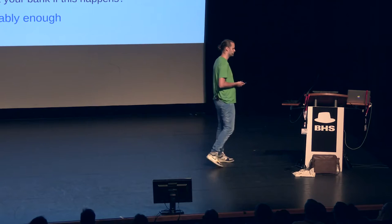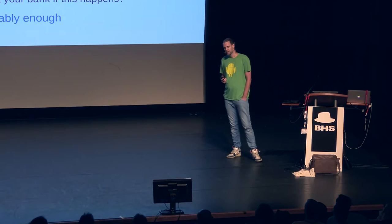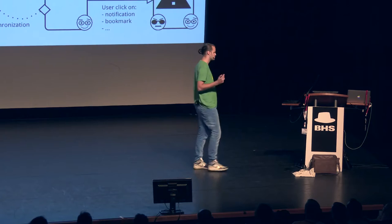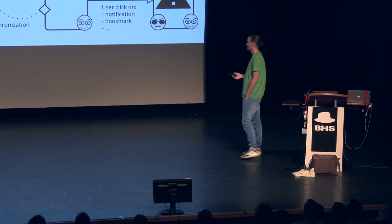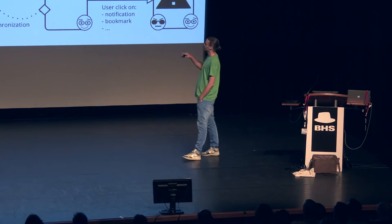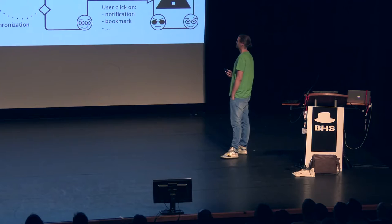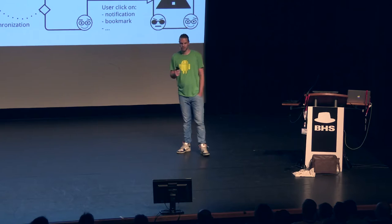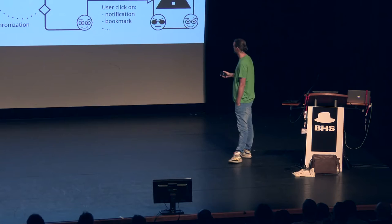In summary, the attack works as follows: the criminal has control over your browser. It will request a remote app install to Google Play. Google Play installs the application. Then synchronization between the desktop and the mobile phone — in our example, bookmarks — is used so that once the user clicks on a bookmark, the app activation is triggered. Now I'm going to show the demo.